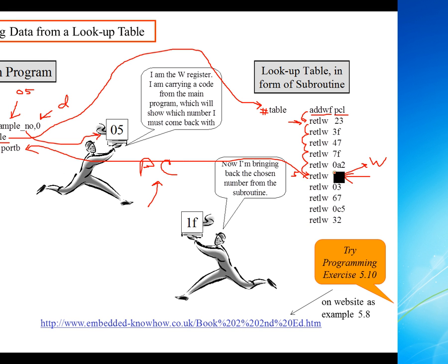So it takes 1F and puts in the W register, and then it returns back to the next instruction. Since W has your 1F, then you can move W to F to port B. And so effectively, you're going to move 1F into port B. So that's the way it works with a simple pictorial diagram. And if you have the textbook that we were showing previously, then try programming exercise 5.10. It is on the following website, embeddedknowhow.co.uk.